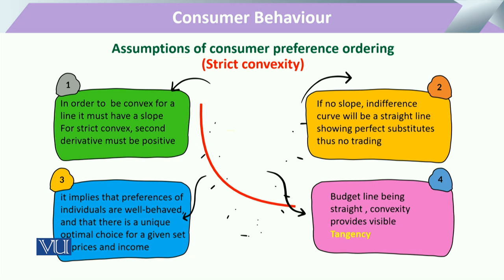Ab agar ham us ki examples ke samne aayen — jis tariqe se ham ne pehle baat ki thi — ke agar ham ek curve draw kar rahe hain is form mein, toh ye basically hamara inward ya left pe sloped curve hai. Aur iske do points ko agar ham join karein with a line, toh ham dekhayin ge ke ye tamam ke tamam curve ke points us line ke left par available rahenge. Toh ye wala curve hamara convex kahalayega.